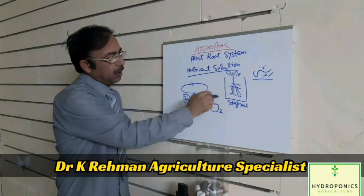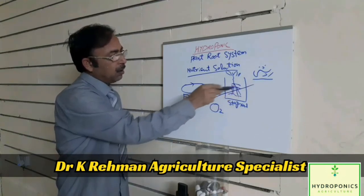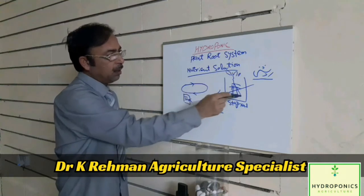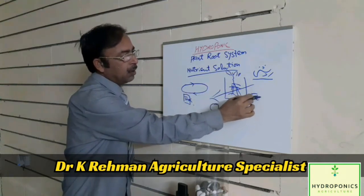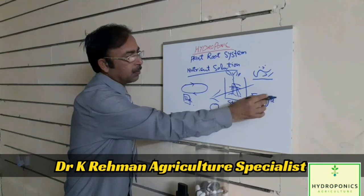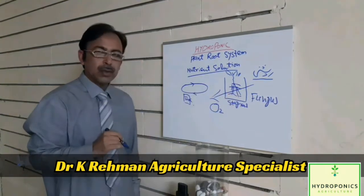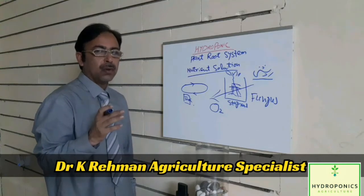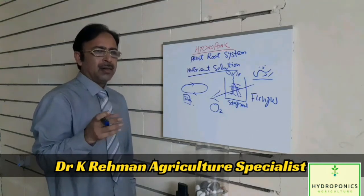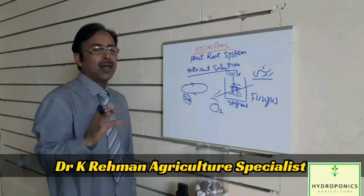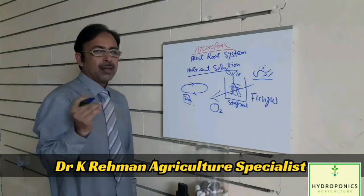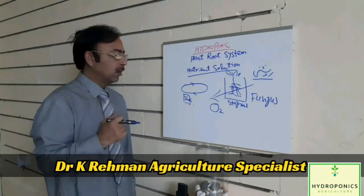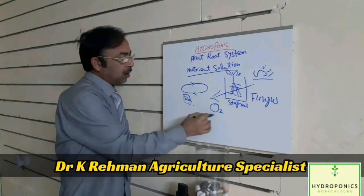Here, the most important factors are oxygen and sunlight. First of all, don't use a growing container that is opaque and through which sunlight can penetrate. If sunlight penetrates, fungus will grow, which depletes the oxygen and creates suffocation in the nutrient solution system.